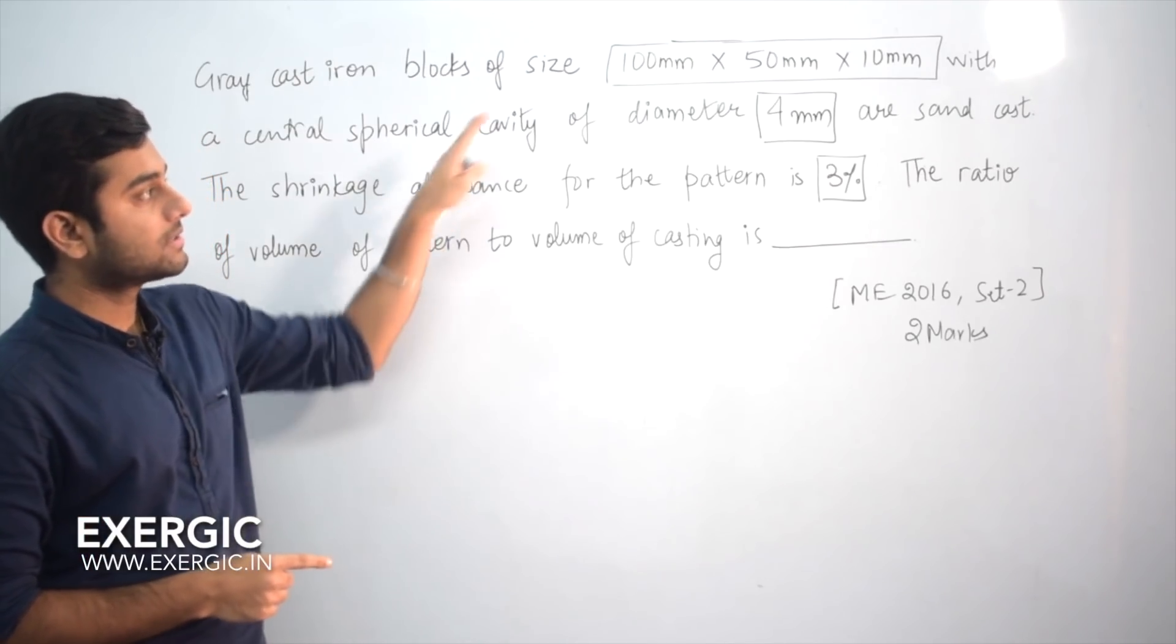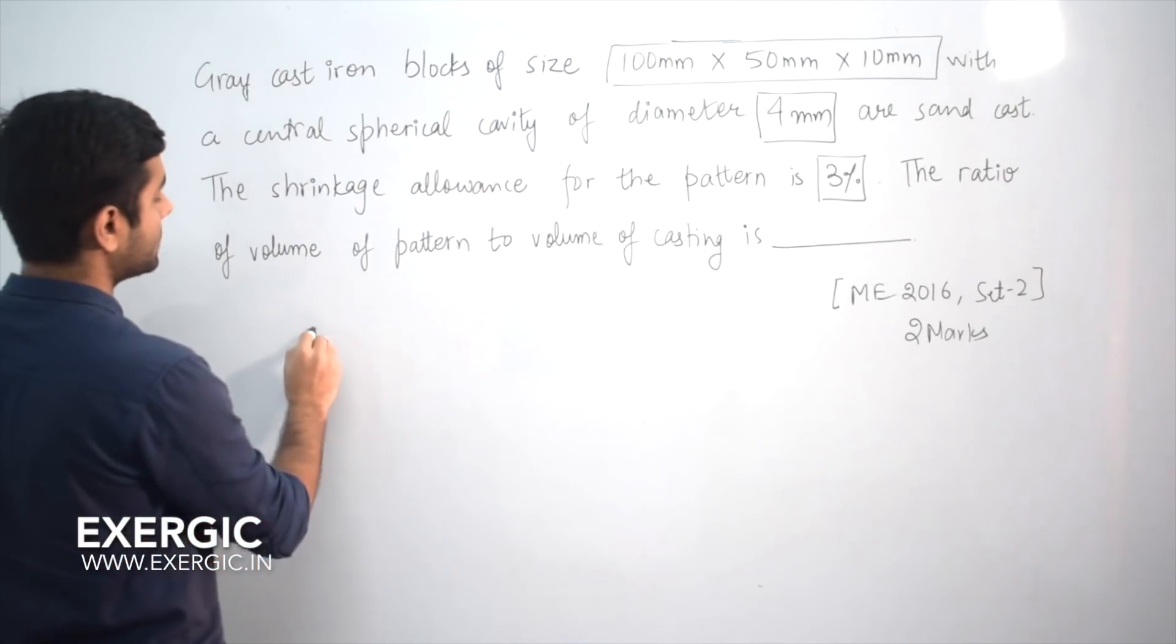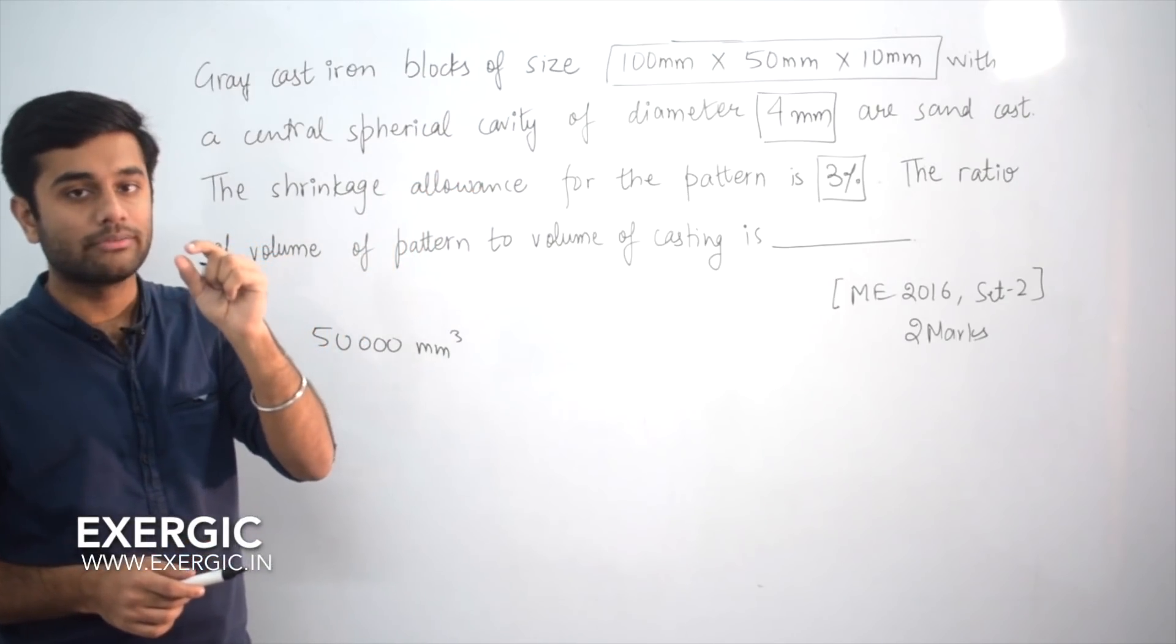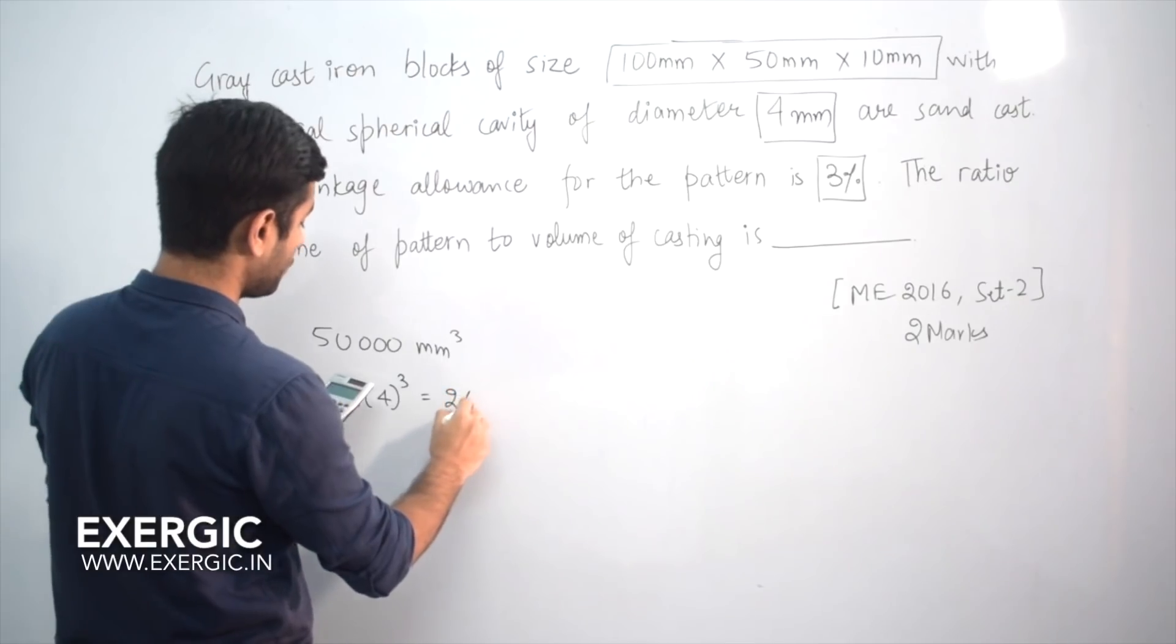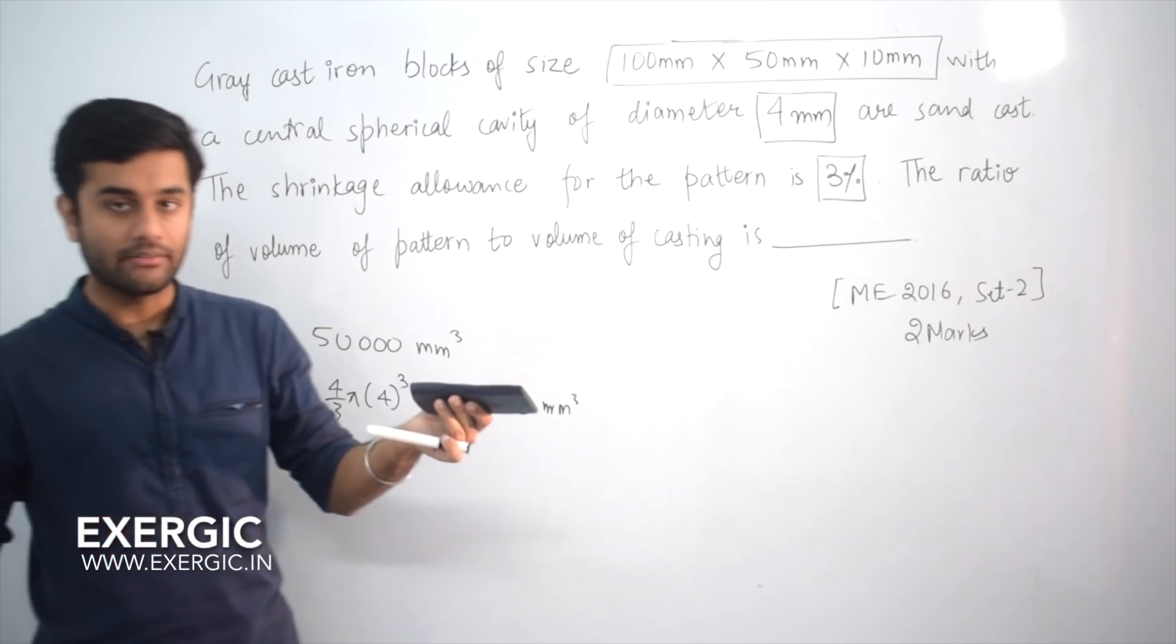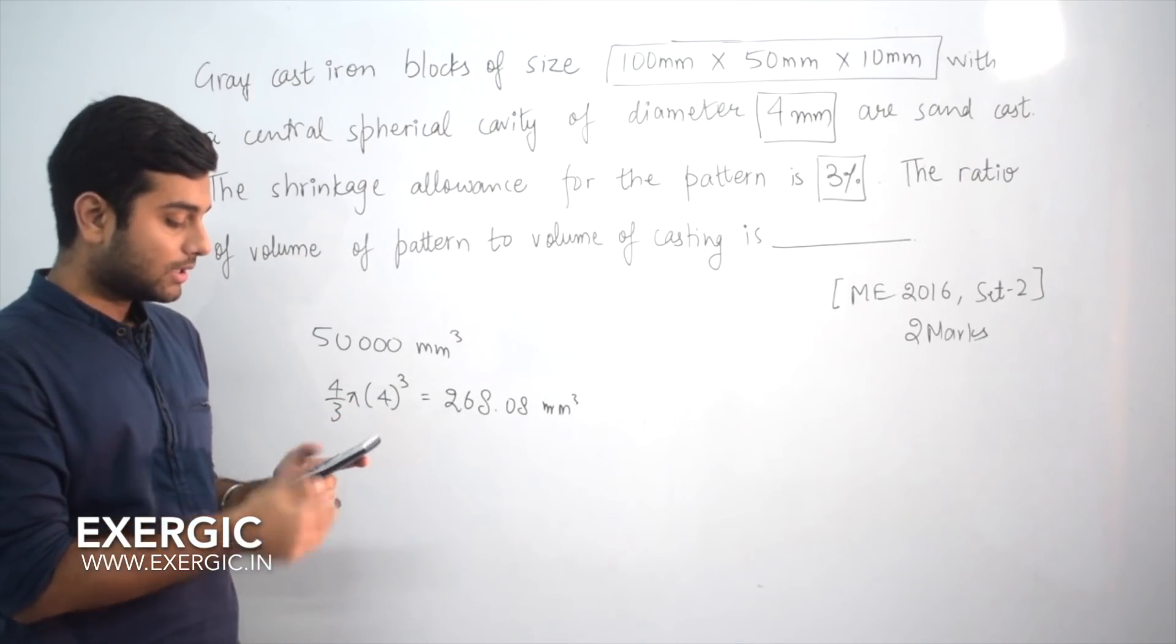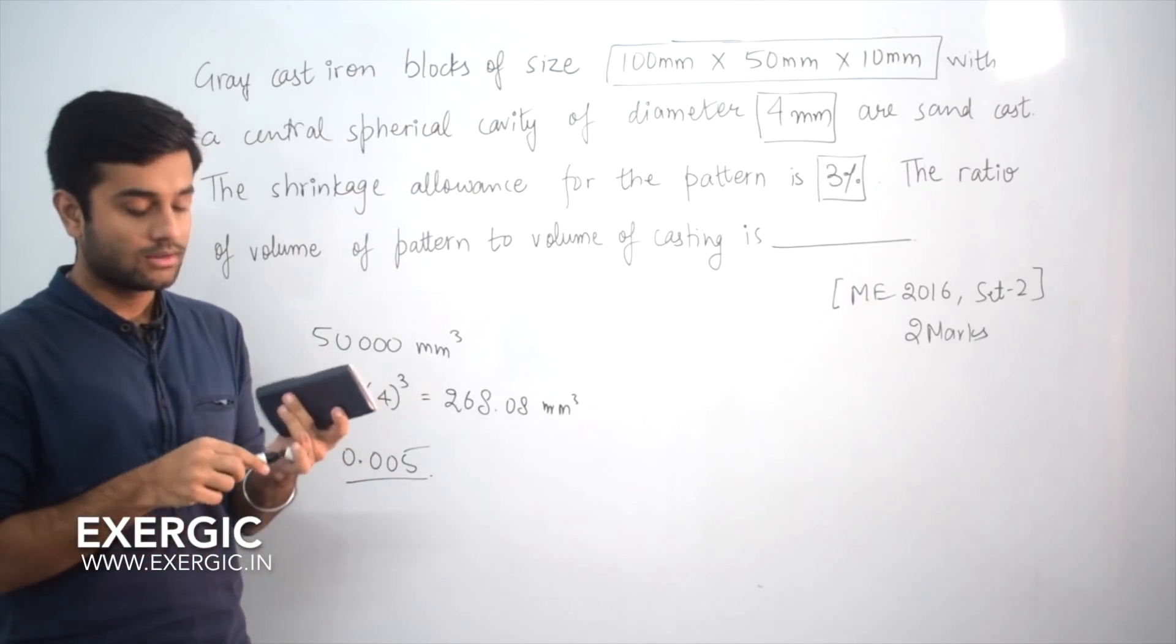Second thing, look at this - the dimension 100mm multiplied by 50mm multiplied by 10mm. What is the total volume of casting? It is 50,000 mm cube. The size of cavity is very small - 4mm cavity. The size of cavity is 4/3 pi r cube. Let me get the calculator. So it will come out to be 268.08 mm cube. 50,000 mm cube of casting and a cavity which is not even 1000, not even 500 mm cube - that is so small. If you take its ratio, it is coming out to be 0.005. So you can see how small the cavity is. Do not bother about the cavity.